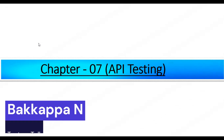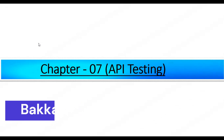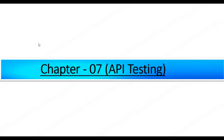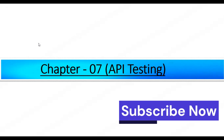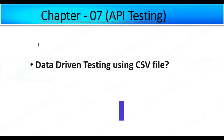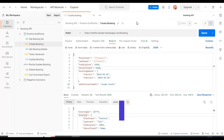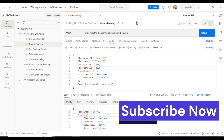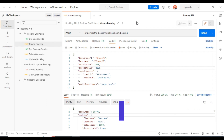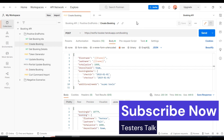Hi friends, this is Bakappa. In the previous API testing tutorial I discussed how to perform data-driven testing using a JSON file. In this chapter 7 of the API testing tutorial, I will discuss how to perform data-driven testing using a CSV file. Let's start discussing how to do that.